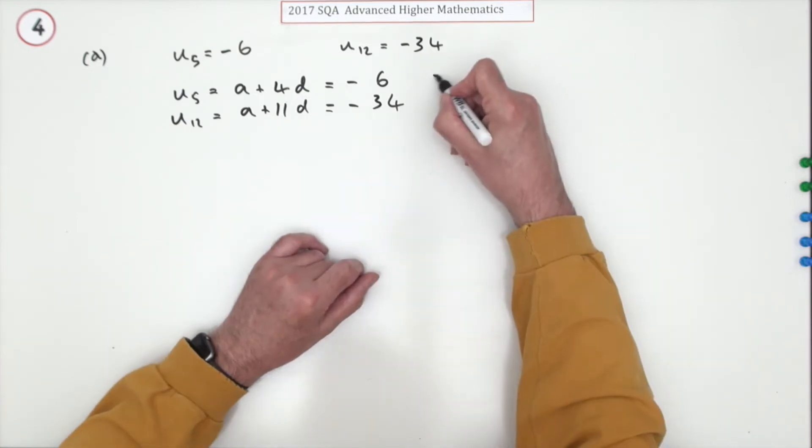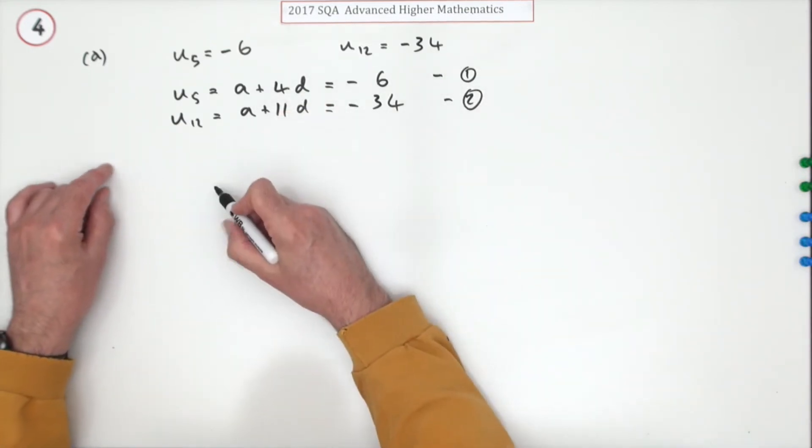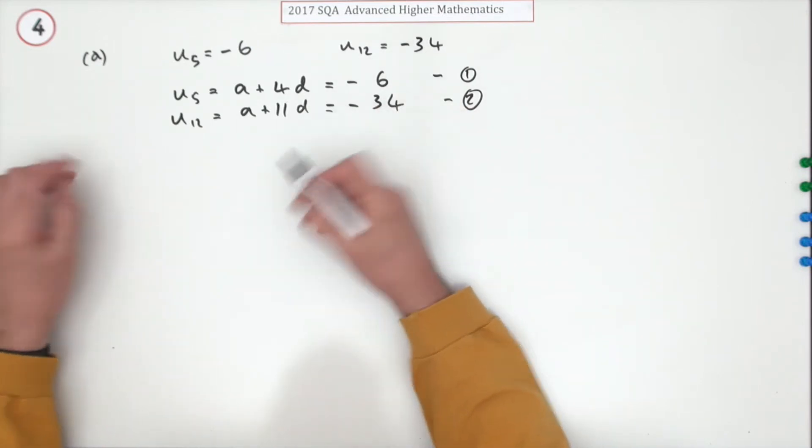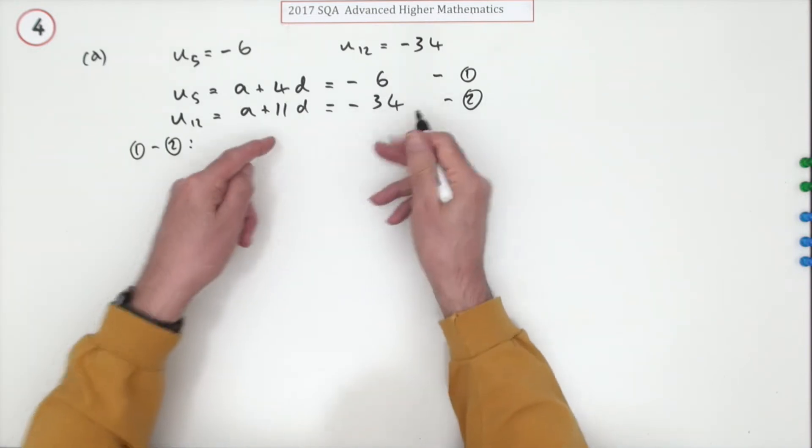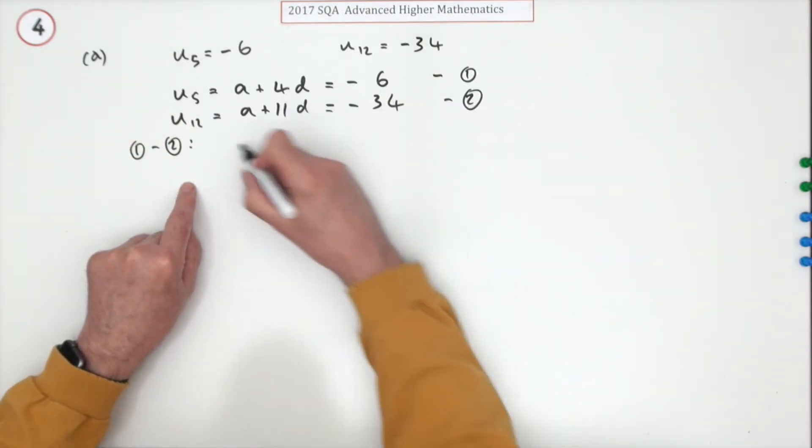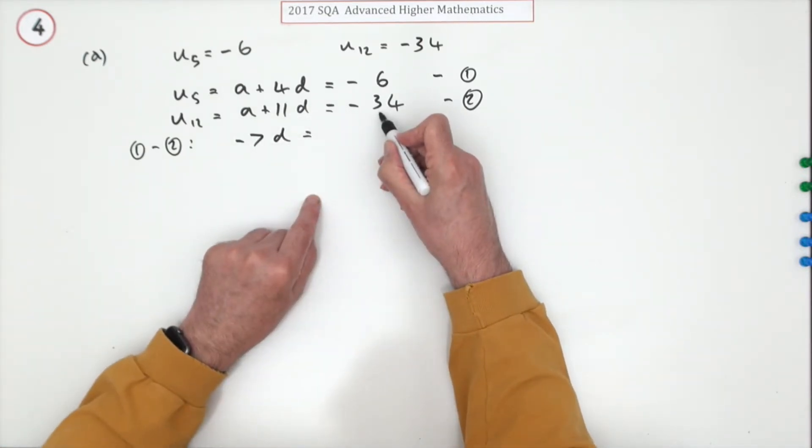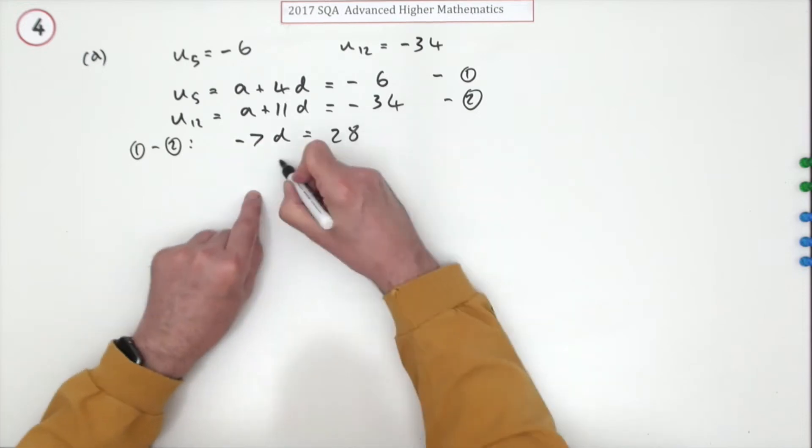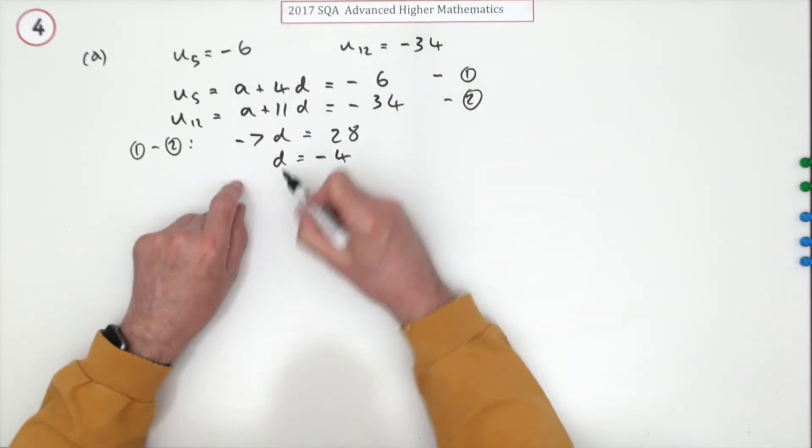Call that one, I'll call that two. So to find a and d we'll just subtract them. Doesn't really matter which way, I'll just do one minus two. So one takeaway two, that means I've got negative seven d equals, but at least this one turns out positive, that'll be 28, which means d is negative four.